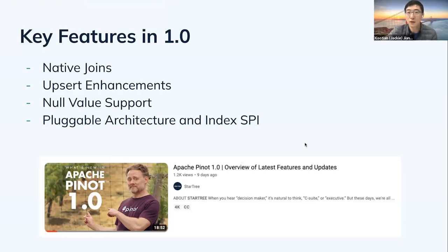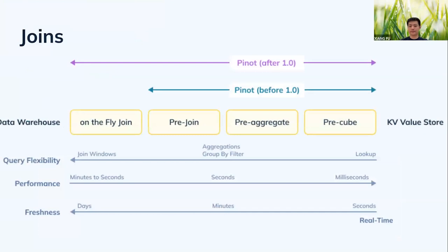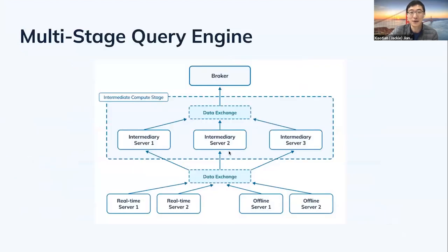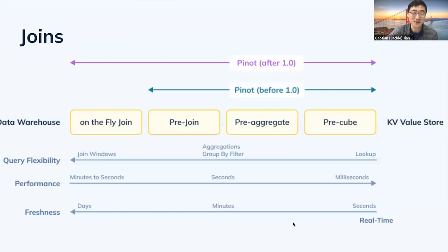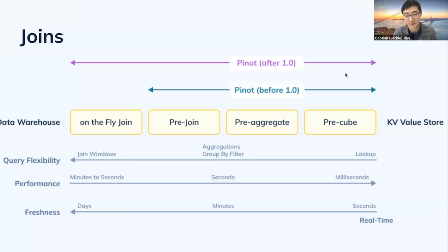Before starting, Jackie wants to know if you watched Tim's video — he gives a very good high-level overview of all these features. Jackie will mostly focus on the technical side. If you haven't watched it, it's highly recommended — it has great animation and explains high-level ideas clearly. Now let's start with the most important feature introduced in Apache Pinot 1.0: the join.